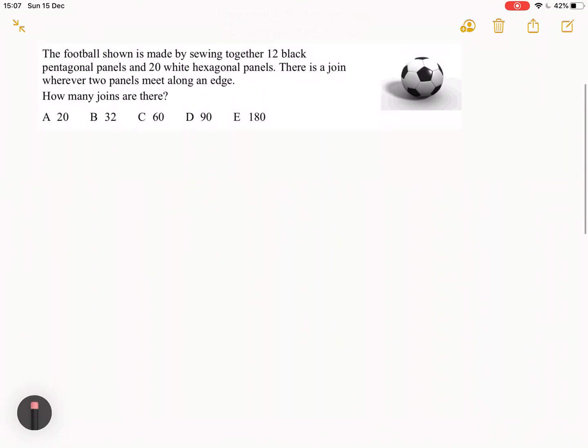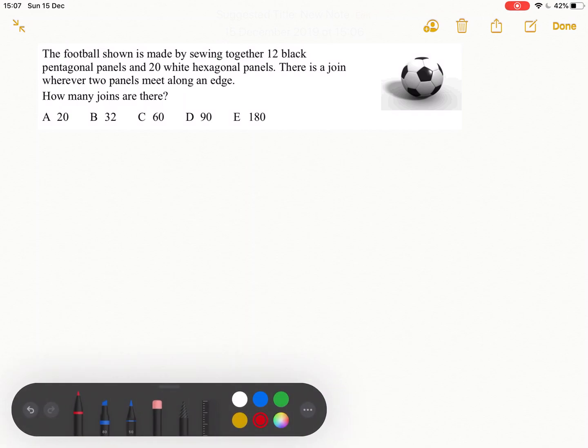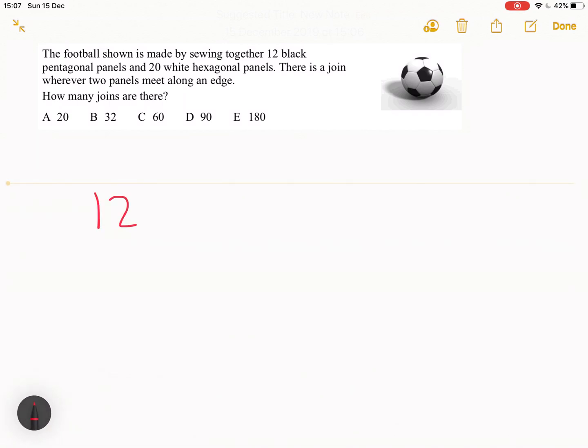Making a mind map of this, you have a football which has 12, well we don't need to know they're black but we can just say pentagons. Basically 12 pentagons and 20 hexagons.